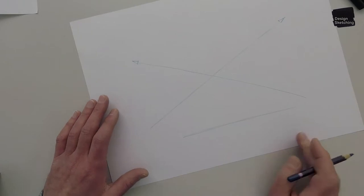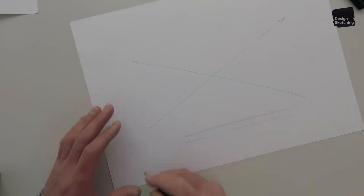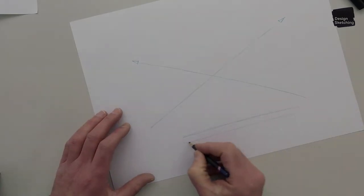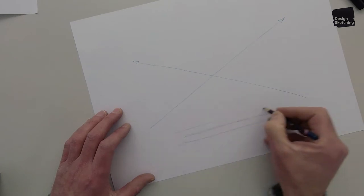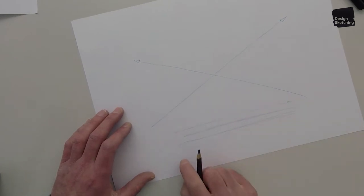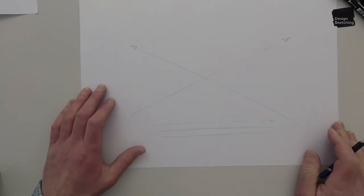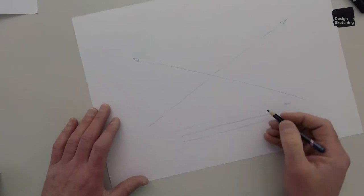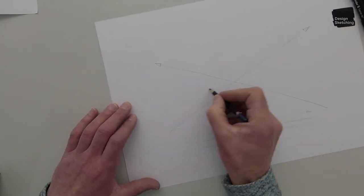But still, if I simply rotate my page a little bit, I free up my posture and the line becomes a lot more fluent like that. It's easier. So whenever you have a horizontal line, that would be the strategy.